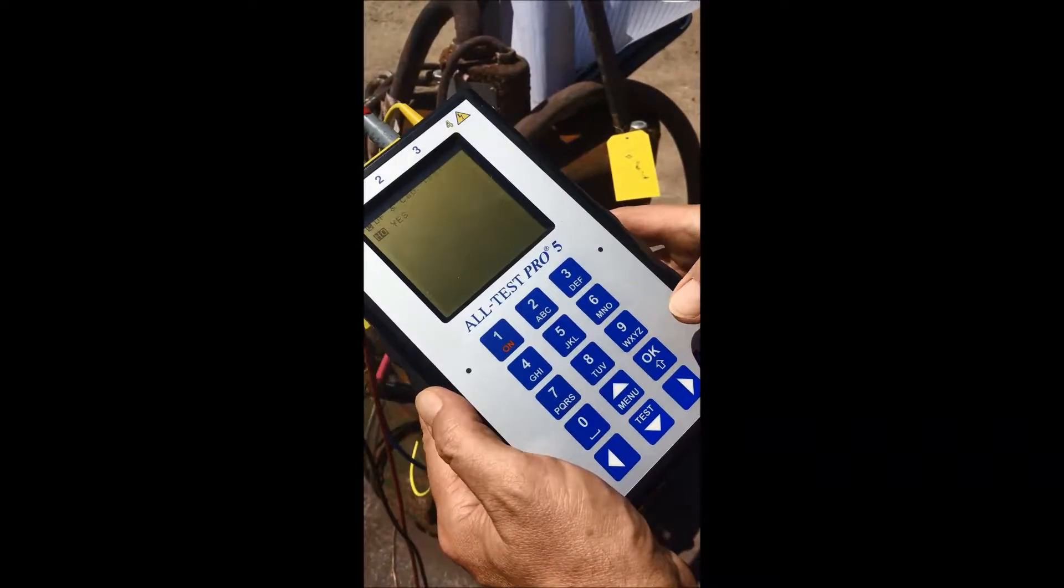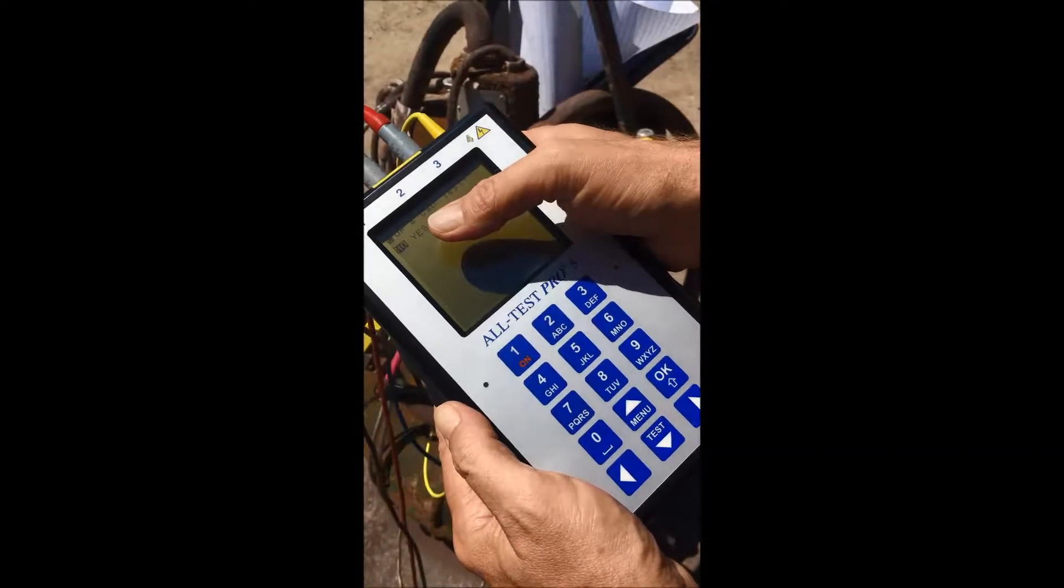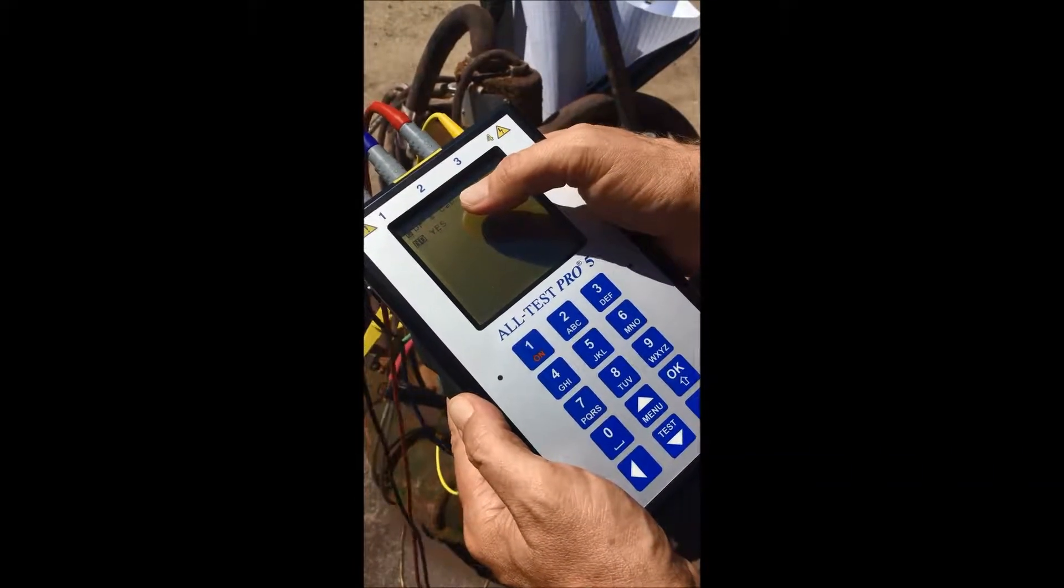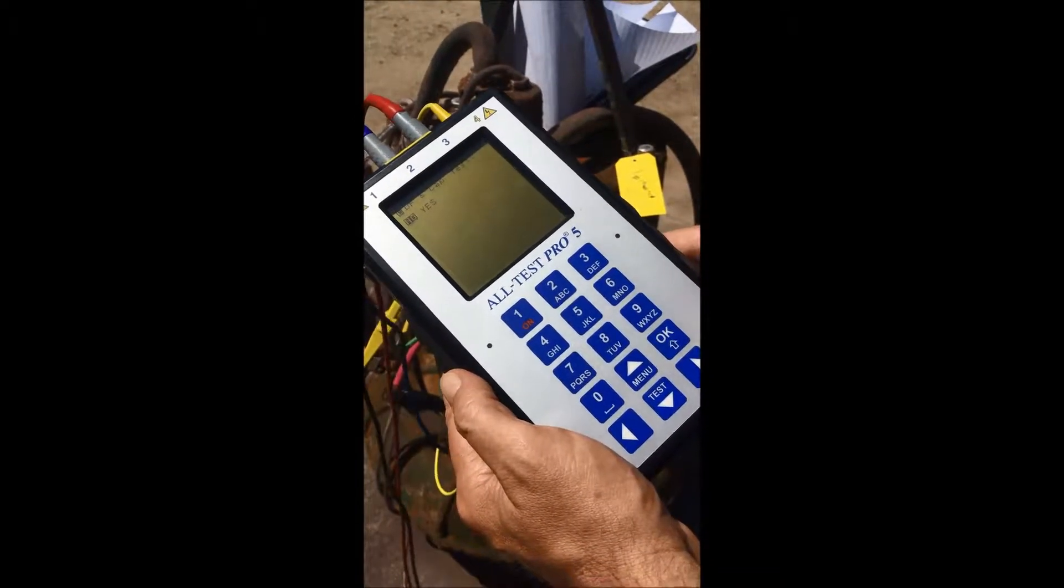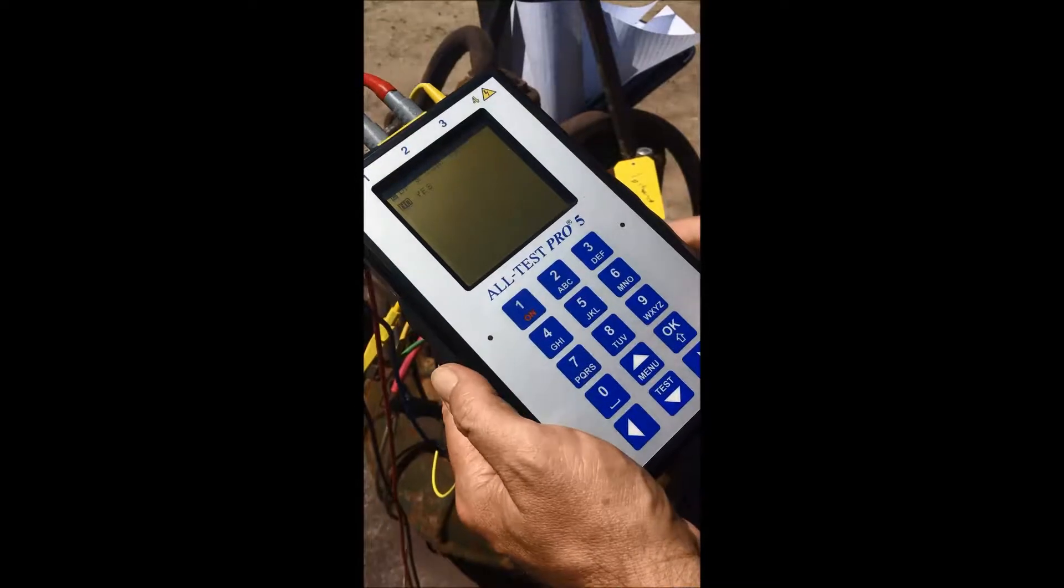We're looking pretty good and it is now telling us hit OK to continue. It's going to walk us right through what to do. We're going to run a dissipation factor and capacitance test. That is going to pick up on winding issues. Something that a megger and a multimeter does not do for you.